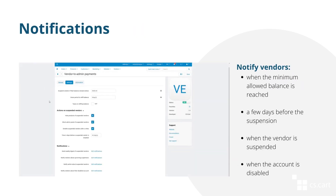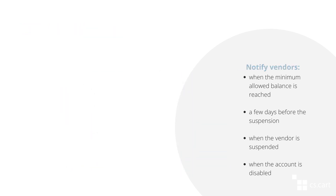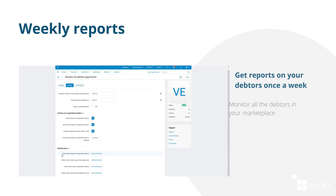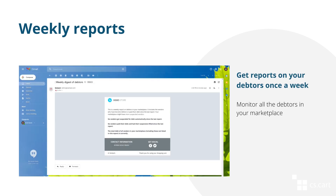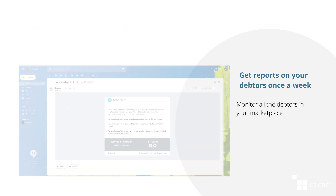Vendors get automatic notifications in the following cases: when the minimum allowed balance is reached, a few days before the vendor is suspended, when the vendor is suspended, and when the suspended vendor is disabled. You can also get a weekly report on all the debtor accounts and their debts, so you can always keep track of the vendors that don't pay in time.